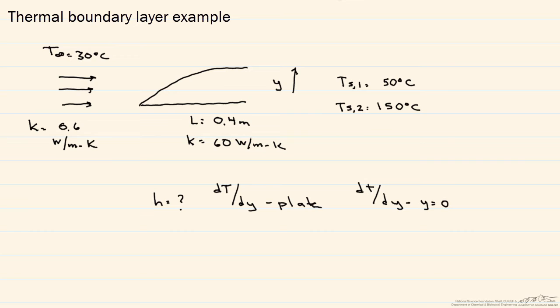In addition, we have convection through that plate because it has a length of 0.4 meters, and the temperature at the bottom of that plate is equal to 150 degrees C.